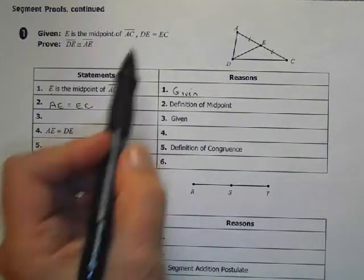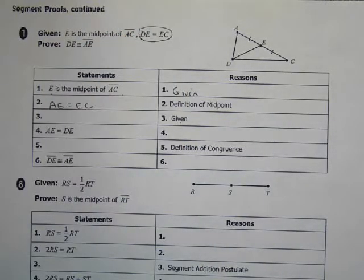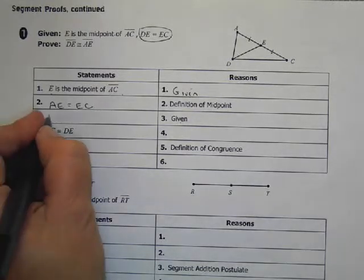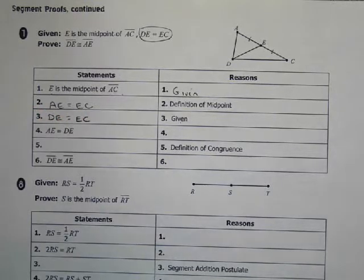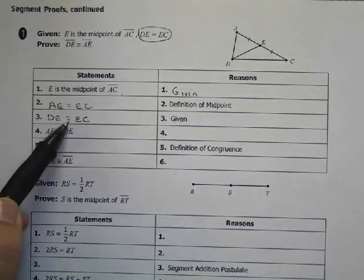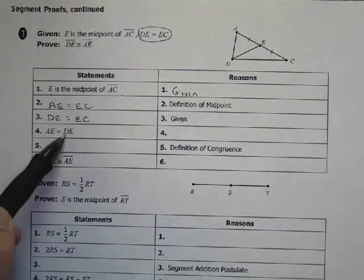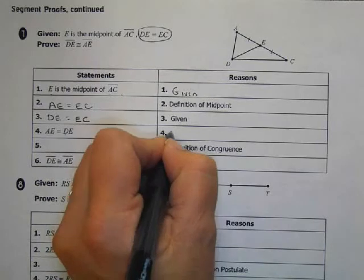And then I had some other given information right here. That was another piece that wasn't included at the very beginning of the proof, and sometimes that happens. So DE equals EC. So since AE equals EC and DE equals EC, I can substitute EC and DE. I can replace. So that's substitution.